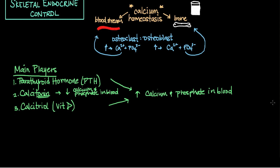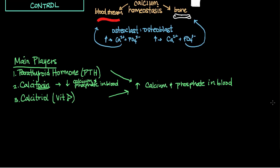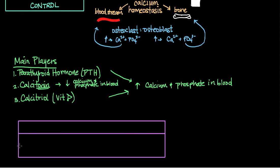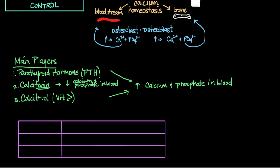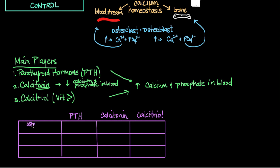It would be particularly helpful to draw out a table and go through how each of these hormones affects the cellular activity of osteoblasts and osteoclasts, and also calcium absorption from either the intestines or kidneys. Going across the table we'll put parathyroid hormone, calcitonin, and calcitriol, and then we'll list osteoblast activity, osteoclast activity, and intestinal or renal absorption of calcium.